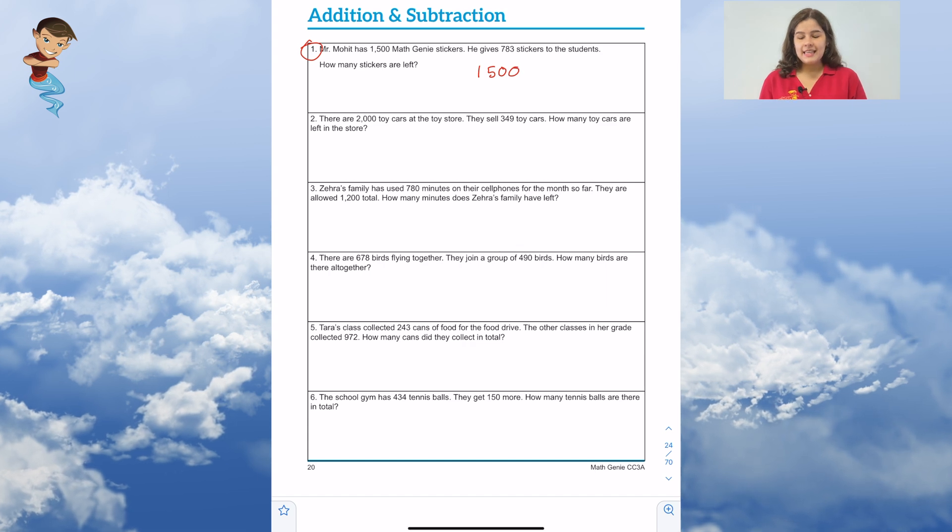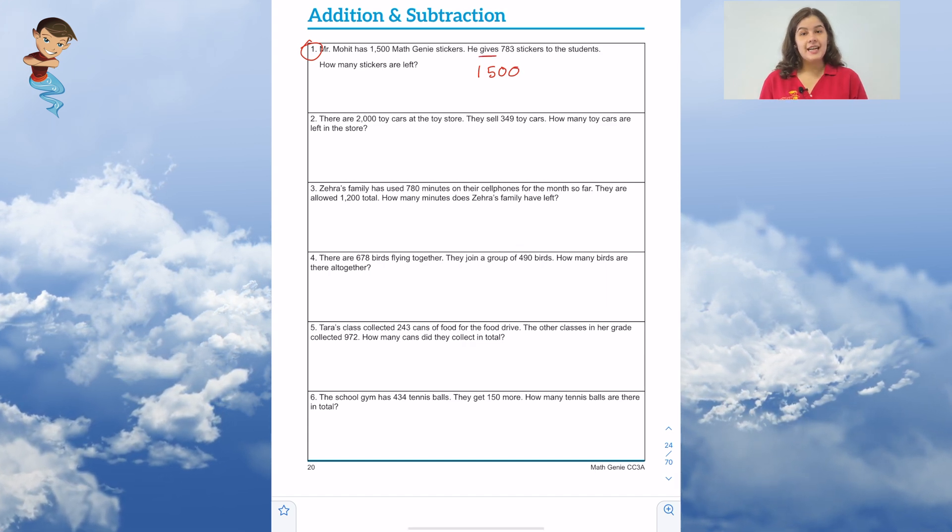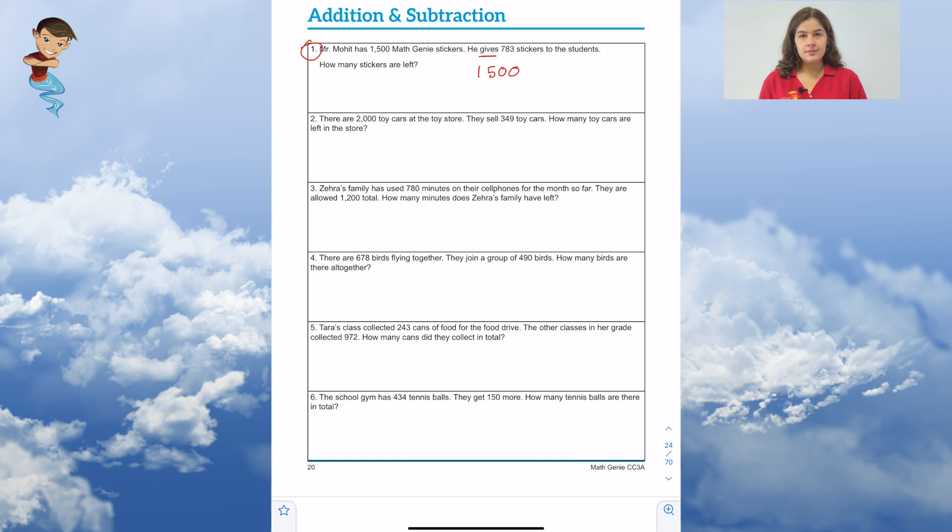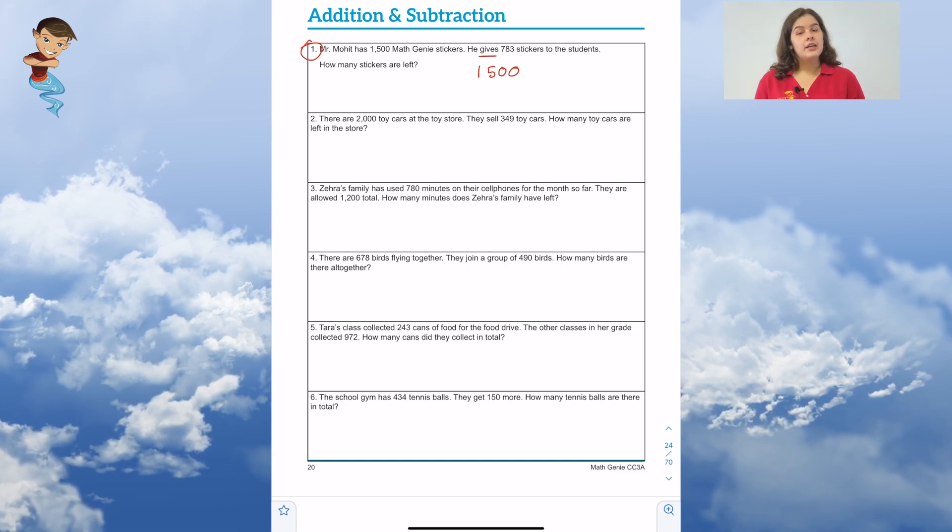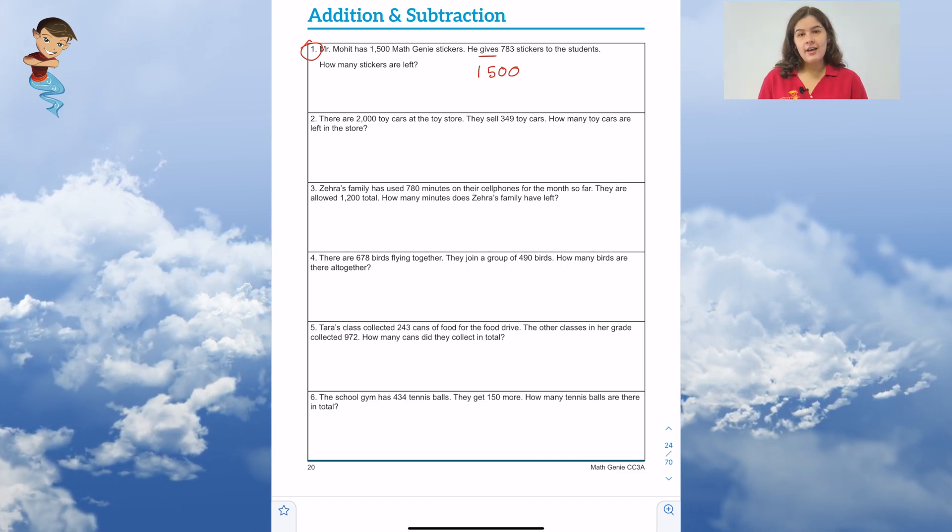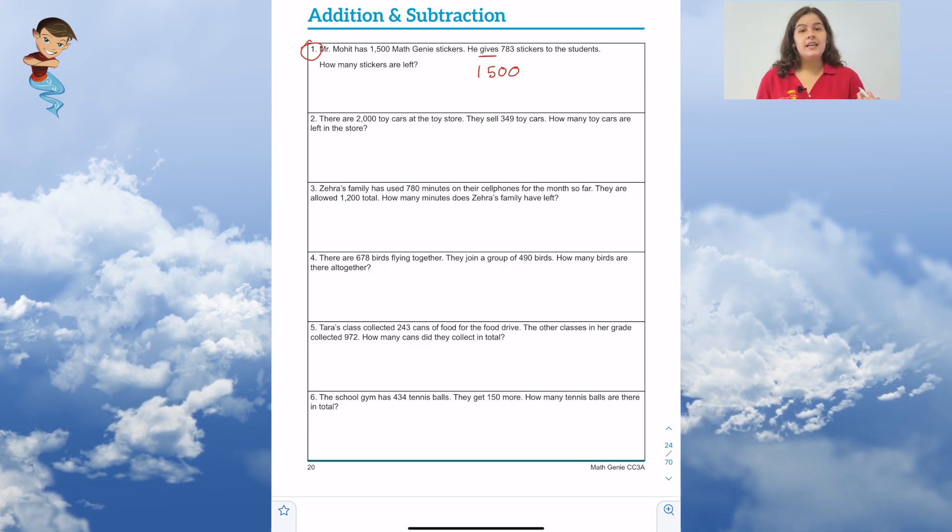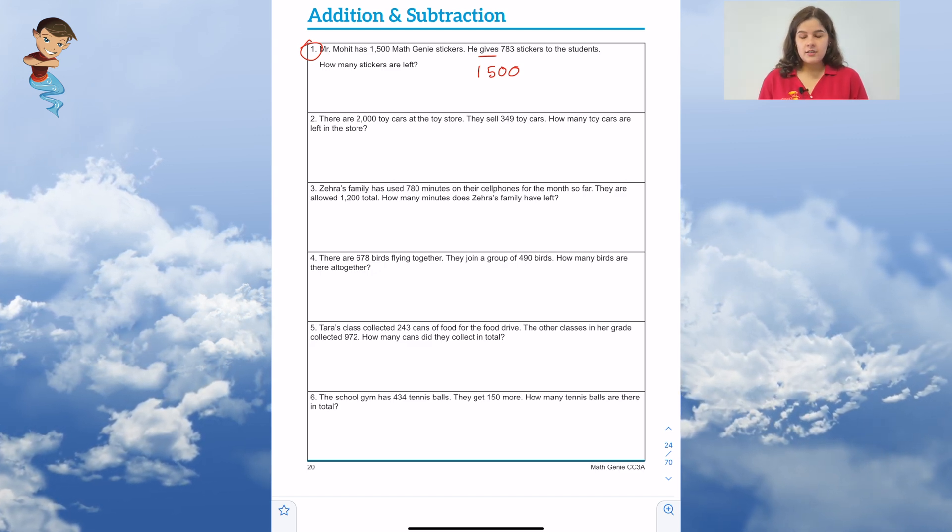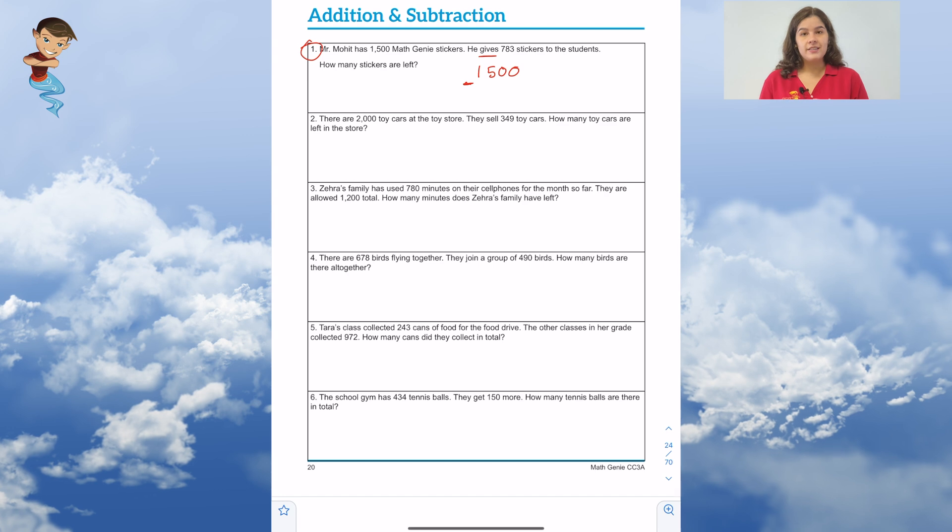Then it says he gives 783 stickers to the students. If we're giving something away, are we going to be adding or subtracting to our value? If we're giving something away, we are subtracting. So we know that is the operation we have to complete.